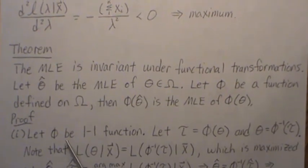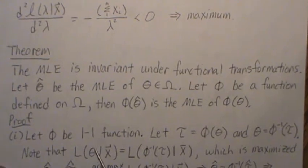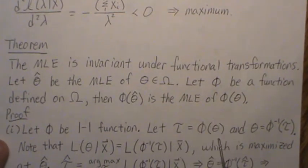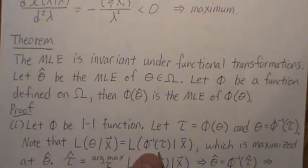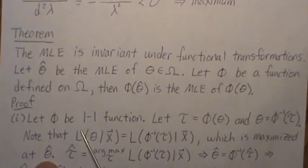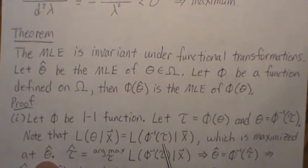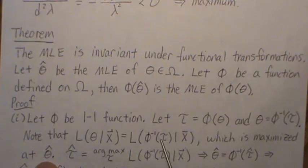For the proof, first let phi be a one-to-one function — this is not a requirement of the theorem, just the first part. Let tau equal phi of theta. Since phi is one-to-one, we can take its inverse so theta equals phi inverse of tau. We plug this into the likelihood function. We know this likelihood is maximized at theta hat, so the maximum of this function written in terms of tau occurs when phi inverse of tau equals theta hat.